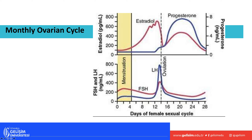Looking at the hormonal pattern: menstruation lasts about 4 to 5 days, then around day 10 LH and FSH start to rise. They peak around day 14 — this is when ovulation generally occurs. At the same time, estradiol levels start to drop. Progesterone levels then increase after ovulation.